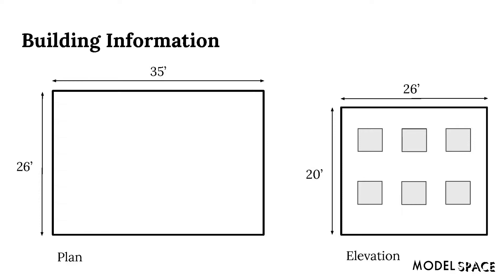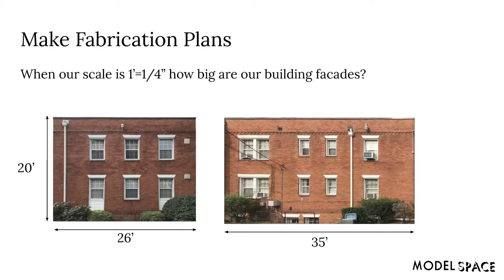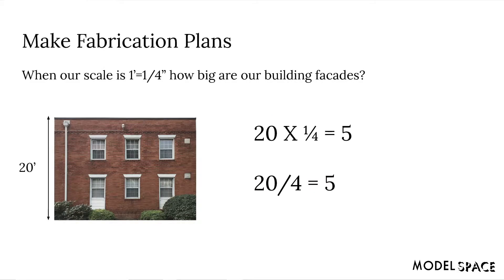Once I got my pictures I started to take measurements of my apartment building. We talked about how we can use scale to convert these real-life dimensions down into a model scale. So with those measurements I could come up with a model scale of one foot equals one quarter inch. What this means is we're going to represent every real-world foot with only a quarter inch on our model. So as a little challenge, think about this: when our model scale is one foot equals one quarter inch, how big are our building facades? Take a moment and pause the video if you'd like to think about this.